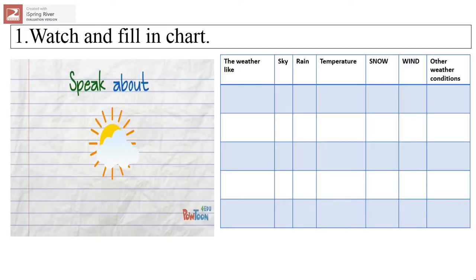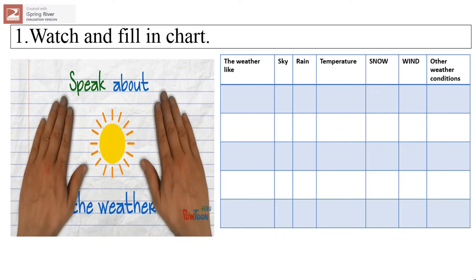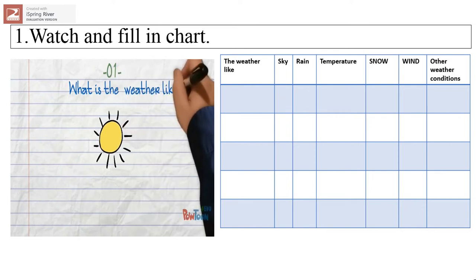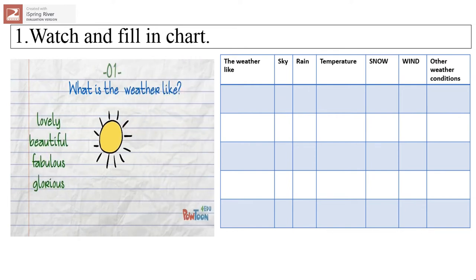Let's speak about the weather and different weather conditions. So, what is the weather like? When the weather is good, you can say it's lovely, it's beautiful, it's fabulous or glorious. And when the weather is bad, it's miserable, horrible, terrible or foul.